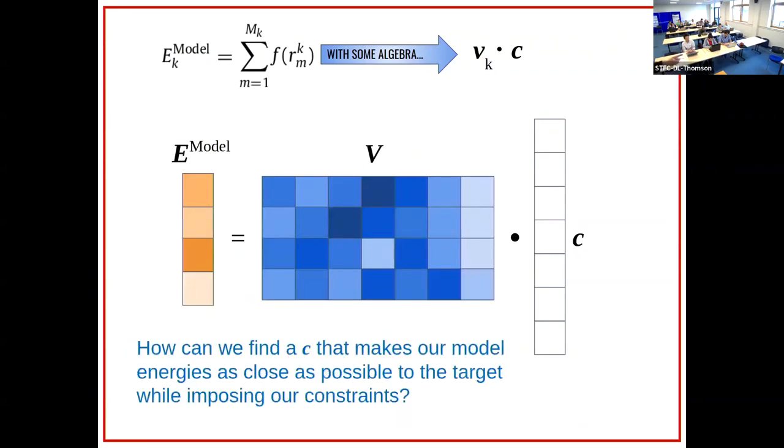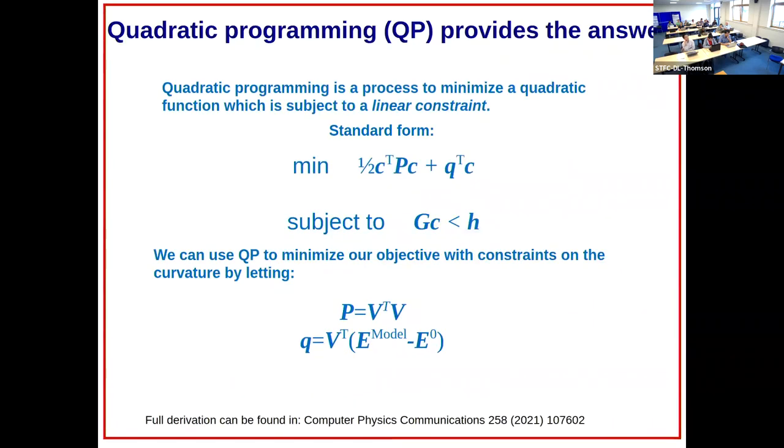It's just some bookkeeping that you need to do, but at the end of the day you can formulate it as a matrix multiplied with these coefficients equals target energy to the left. You can cast it in a linear form very conveniently. The only remaining thing now is to encode the constraint.